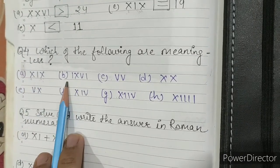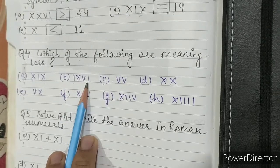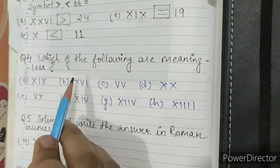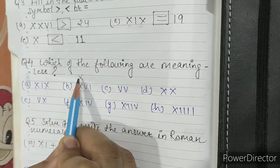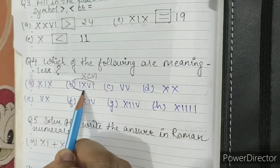Part B: IXVI is 9, 6. This is not the correct answer. If we want to write 96, it will be XCVI. So this is meaningless.